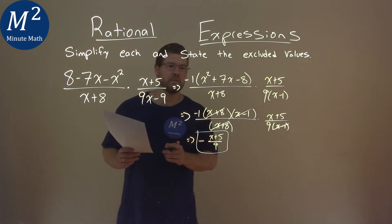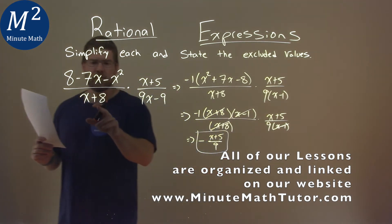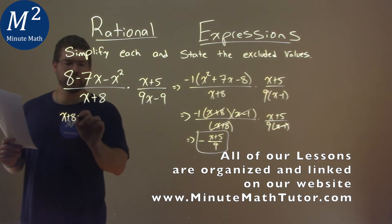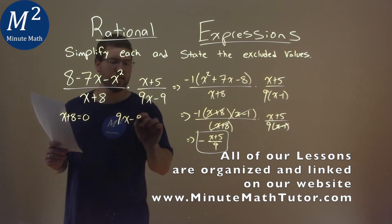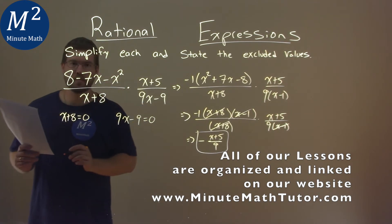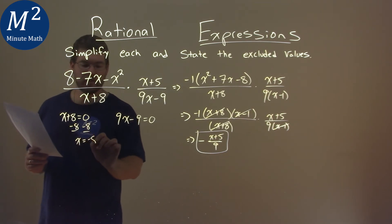But we have to find our excluded values, and that's when our denominator is equal to 0. So to do that, we take our x plus 8, set it equal to 0 from our original expression, and 9x minus 9 equal to 0. We solve each one individually. Subtracting 8 to both sides, we have x equals negative 8.